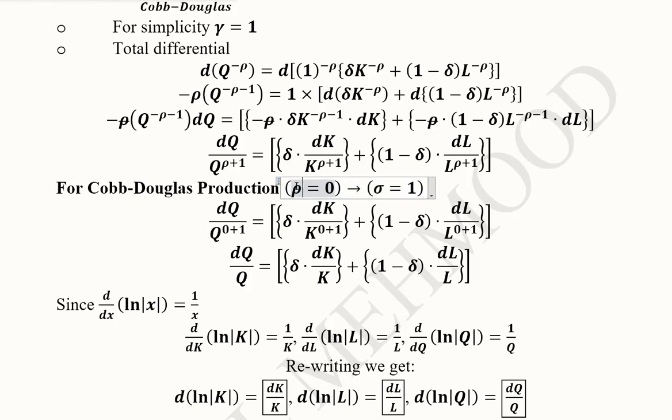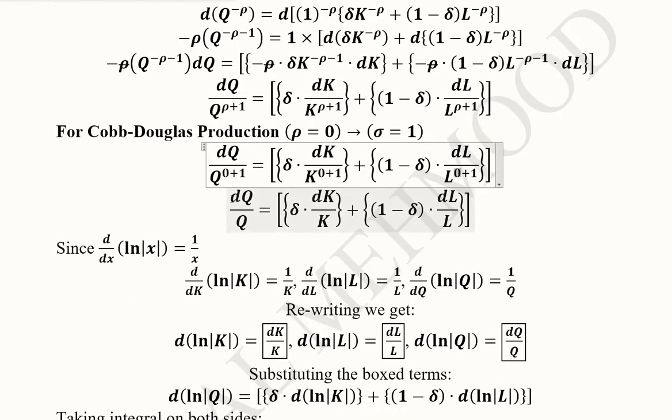But here we are having Rho in these expressions, so we are going to put 0 instead of Rho. Here we are 0 in all those places where Rho was present and the term has now reduced to this expression.